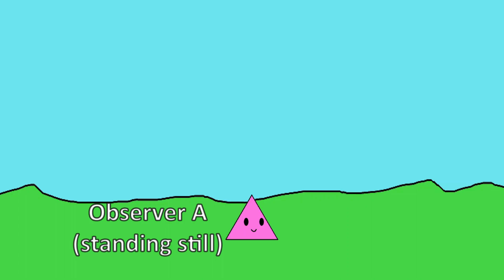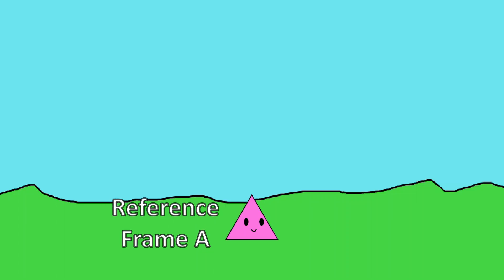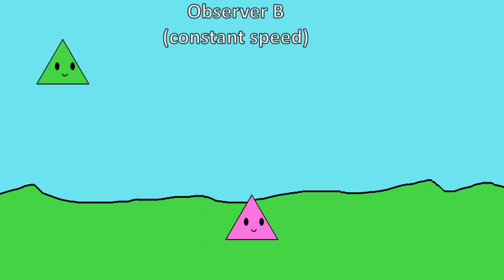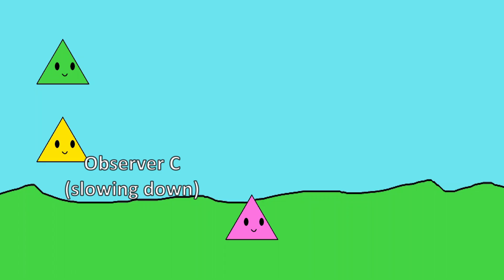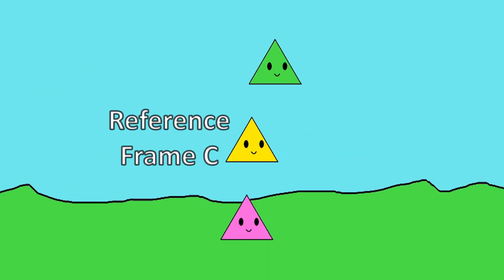A reference frame is essentially just a perspective. If an observer is standing still, then their perspective is a reference frame. If an observer is running past, then their perspective is also a reference frame. If an observer is slowing down, then their perspective is a third reference frame.